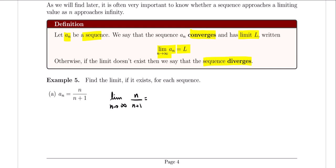For this type of problem, all that we need to do is take the limit as n approaches infinity and see if we actually get a value. We're going to apply L'Hôpital's rule. Remember, L'Hôpital's rule says that if we have an indeterminate form — in this case infinity over infinity — we can take the derivative of the top and the derivative of the denominator. The derivative of n is 1, divided by the derivative of n plus 1, which is also 1. So we're taking the limit of 1 as n approaches infinity, which is just 1. This sequence converges to the value of 1.